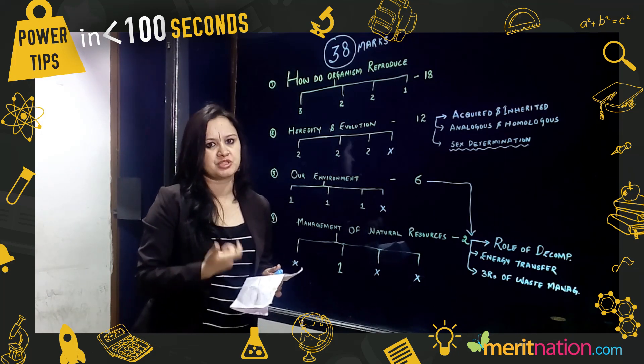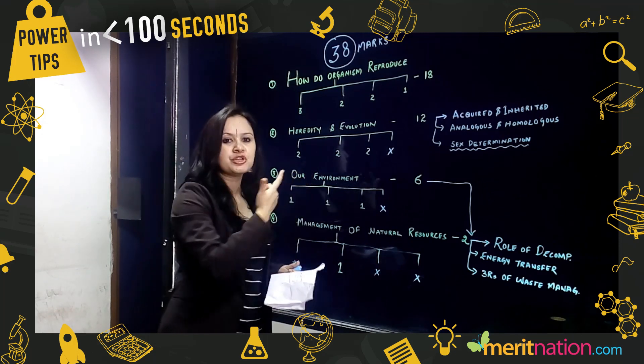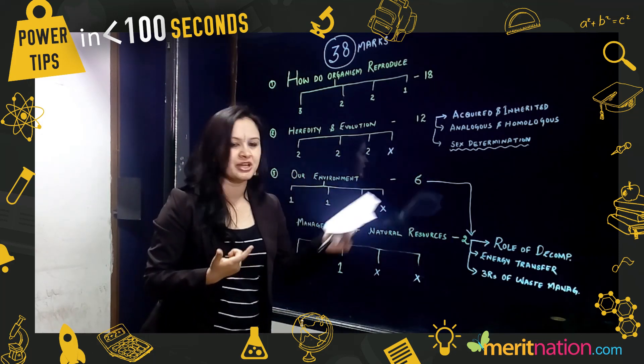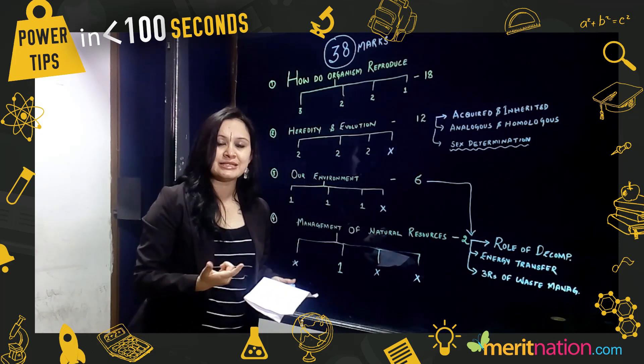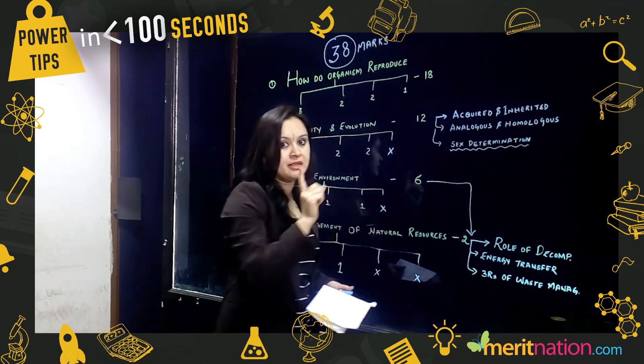These are really favorite topics from CBSE. For Heredity and Evolution, important topics are acquired and inherited traits, analogous and homologous organs, and sex determination - that is why I've underlined it here, it is very important.